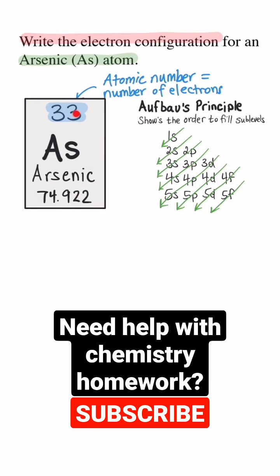Arsenic has 33 electrons. We know that because its atomic number is 33. Let's start at the first arrow. That'll tell us the first sublevel is the 1s. An s sublevel can hold a maximum of 2 electrons, so I'll write the superscript 2. That accounts for 2 of the 33 electrons.